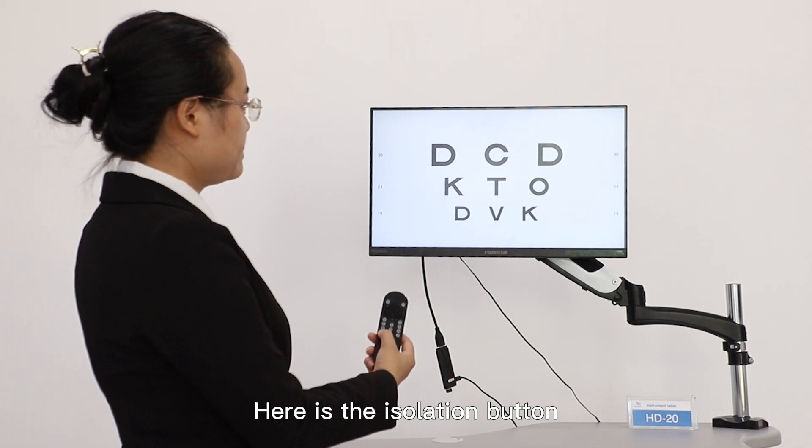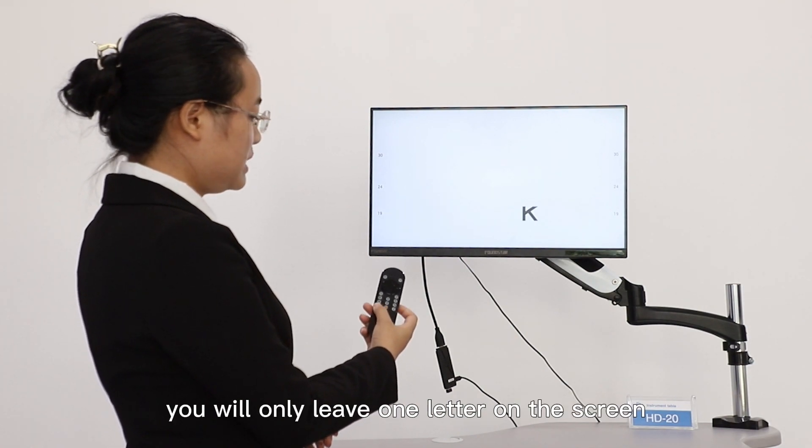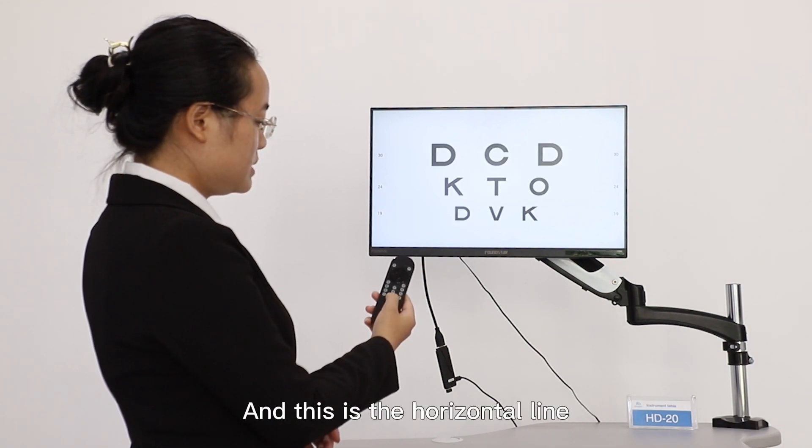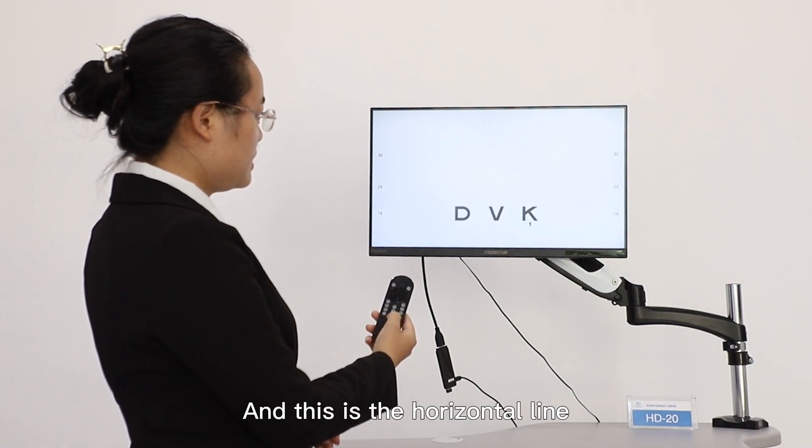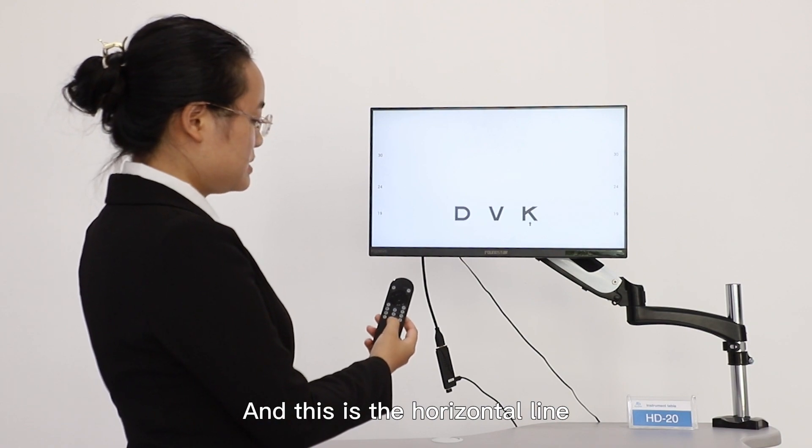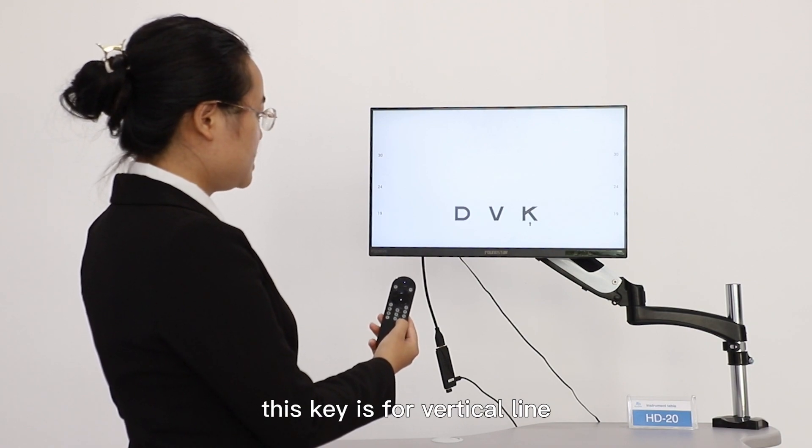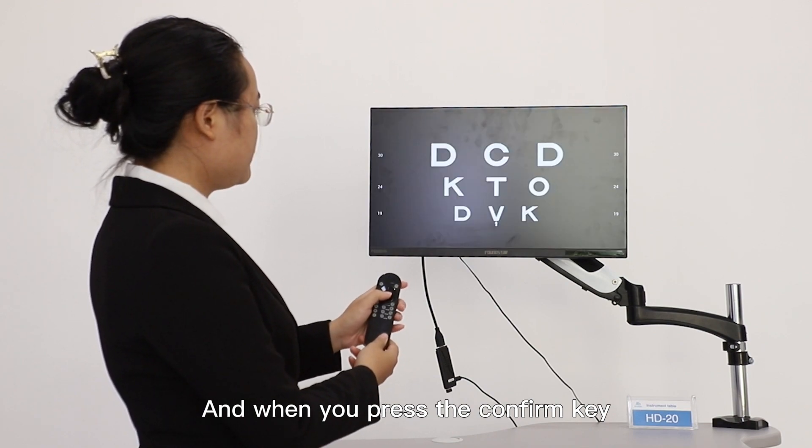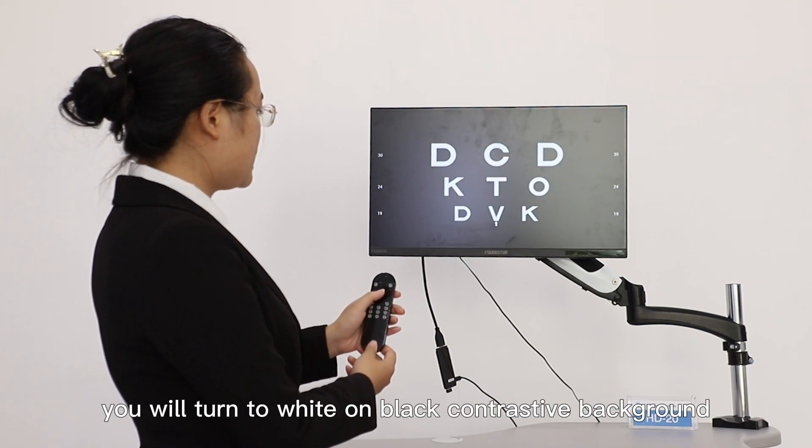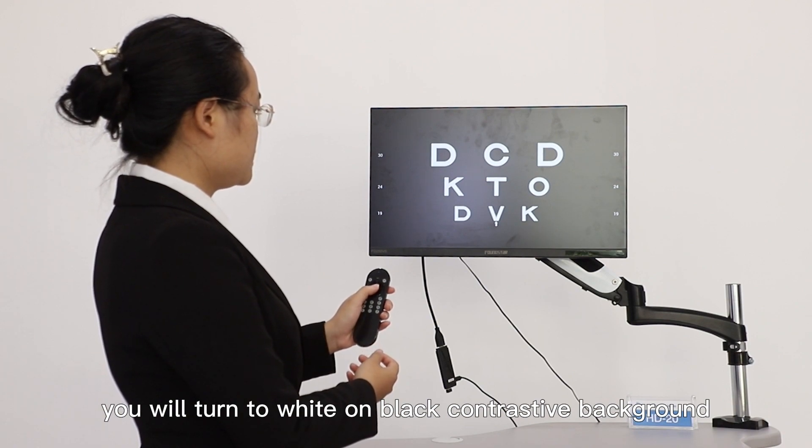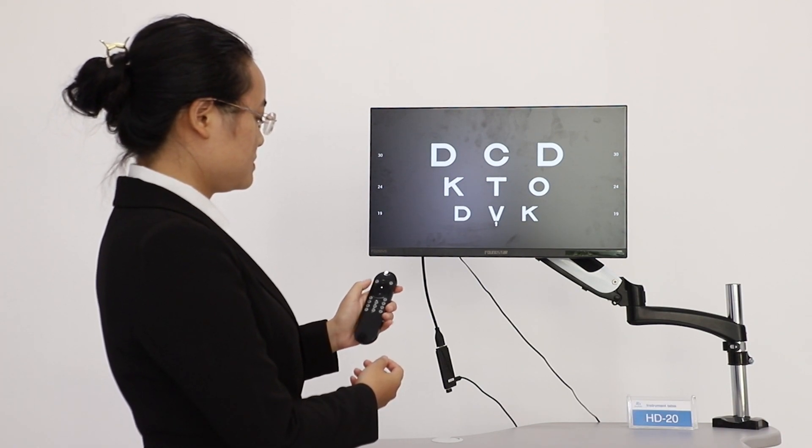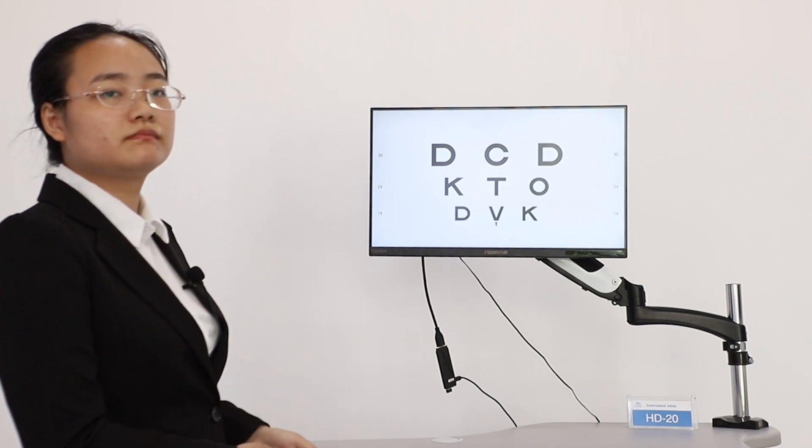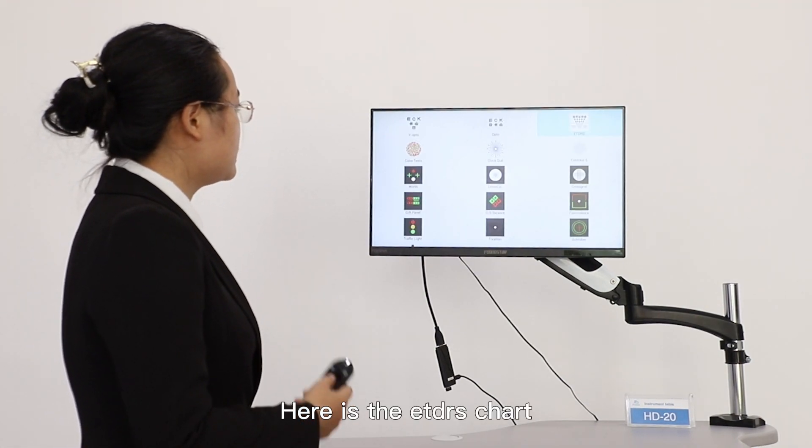Here is the isolation button. You will only have one letter left on the screen. And this is the horizontal line. This key is for vertical line. And when you press the confirm key, you will turn to white on black contrast background. And you push again, you will go back. Here is the ETDRS chart.